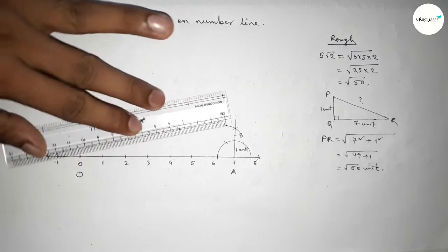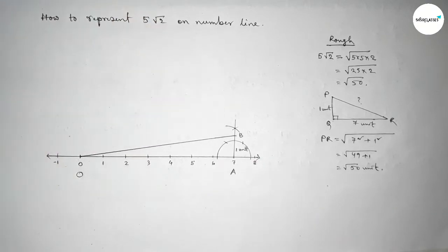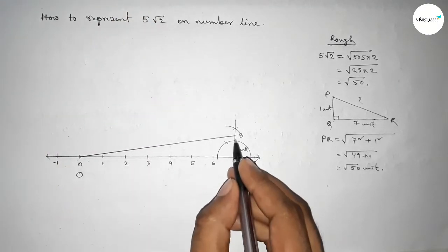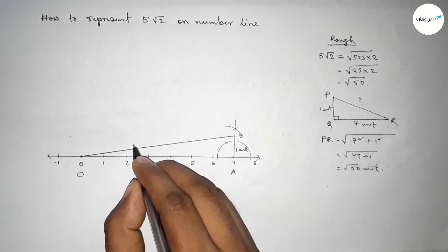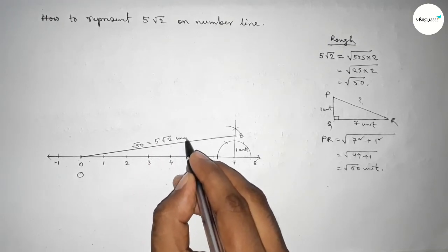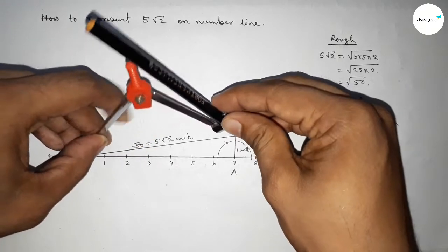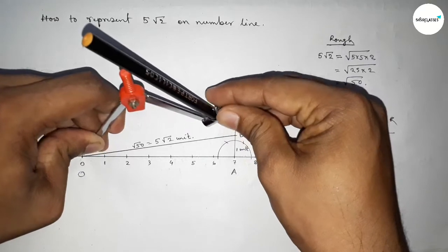Now joining O and B line and this is the hypotenuse. From right angle triangle OAB, this is obviously √50 or 5√2 unit. Now taking the length OB by using compass.